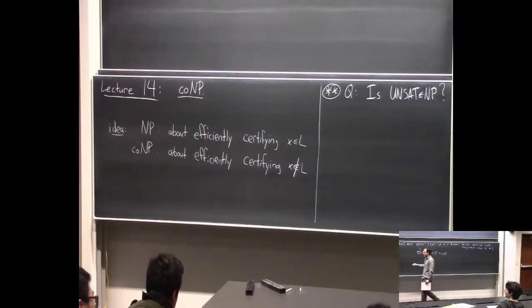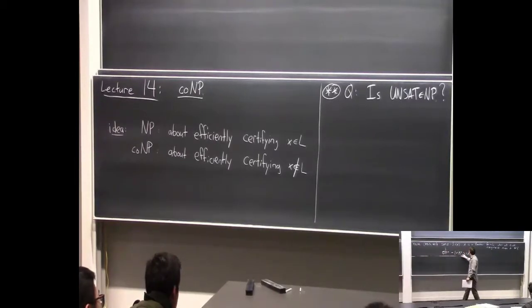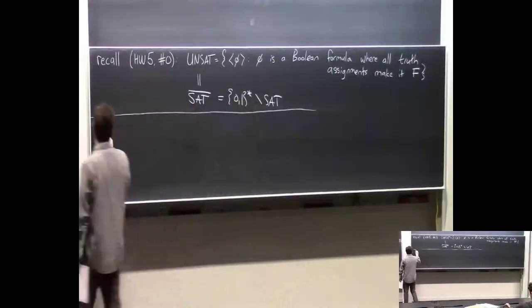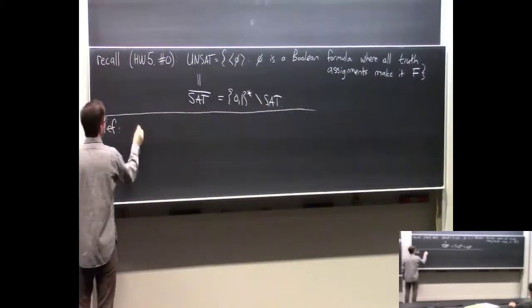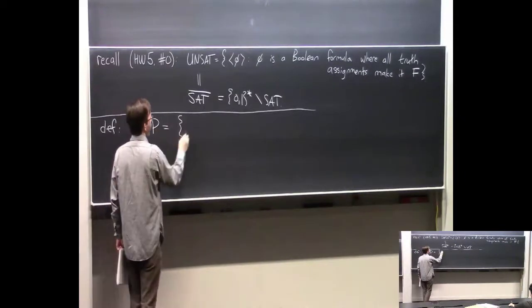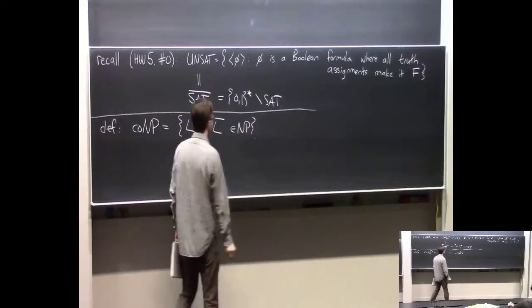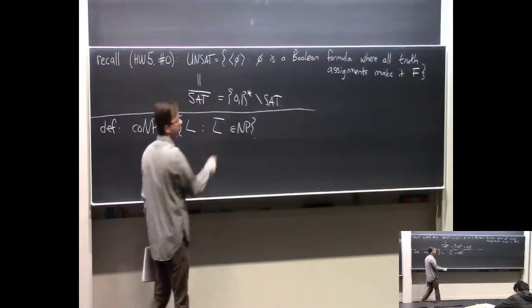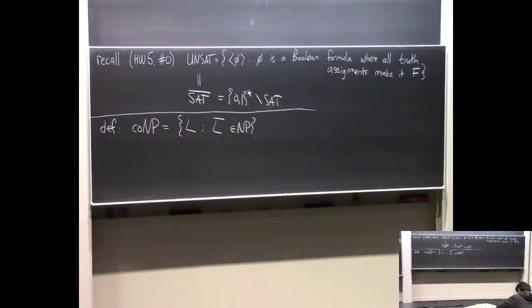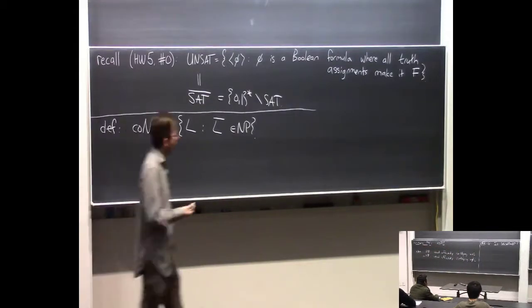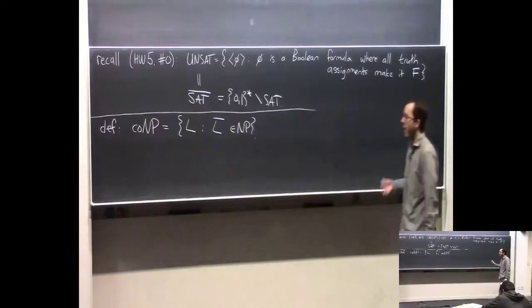So let me make the formal definition for co-NP. It's an extremely simple definition: co-NP is just literally all the languages such that the complement of the language is in NP. So you can get the languages in co-NP just by taking any language in NP and taking its complement—all the strings that are not in that language. At first, it looks like a trivial definition, but hopefully you'll see why it matters.